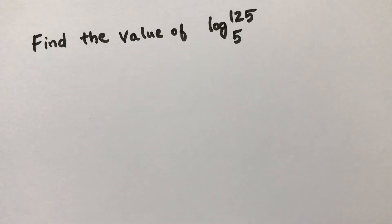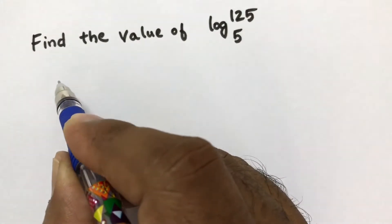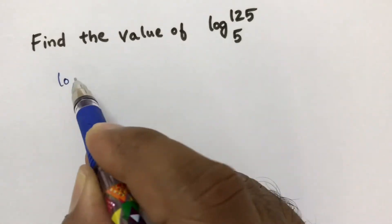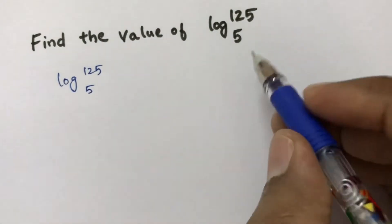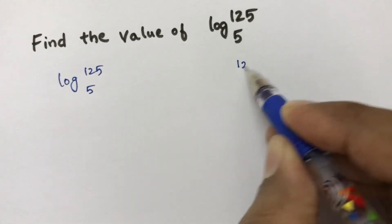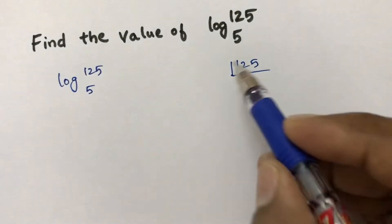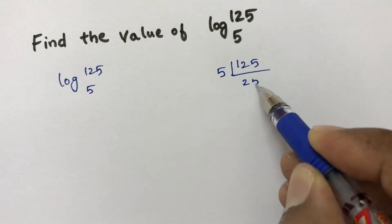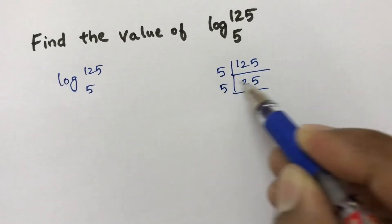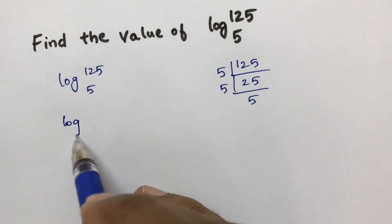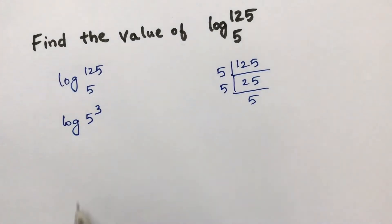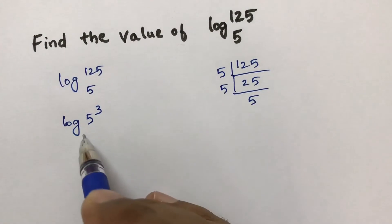Find the value of log 125 to the base 5. Here, 125 can be broken into prime factors: 5 times 25, and 25 is 5 times 5. So 125 can be written as 5 cubed, meaning we have log 5 cubed to the base 5.